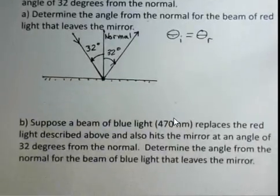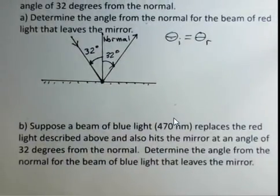So now a little review. We changed the light to now be blue instead of red. It's also coming in at 32 degrees away from the normal. What's the angle from the normal for the blue light?